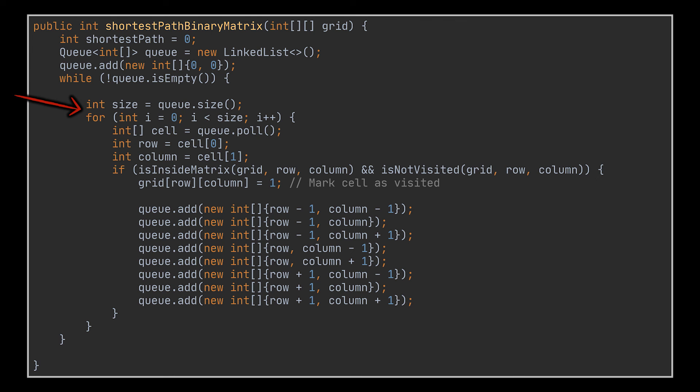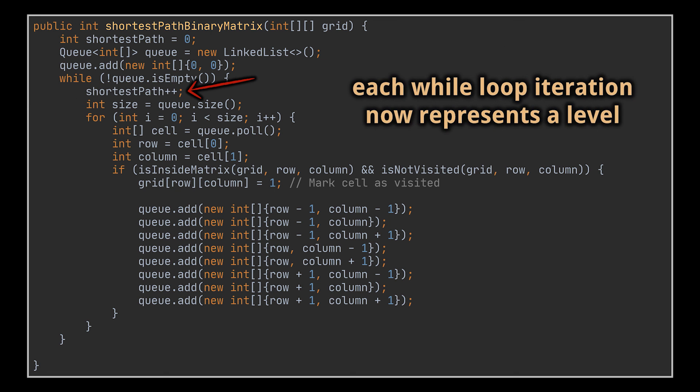If you never encountered the logic we just referred to, feel free to check the video linked in the card above. This is achieved here in a similar manner, as you can see. This allows us to increase the shortest path variable we have every time we start a new while loop iteration, as it represents the start of a new level.